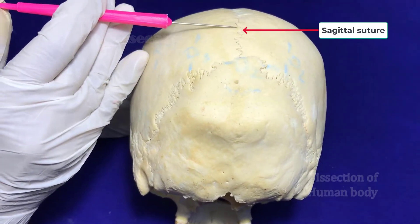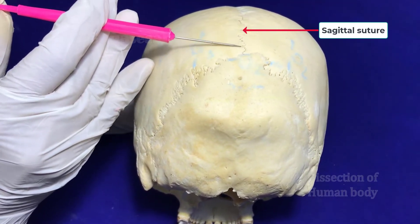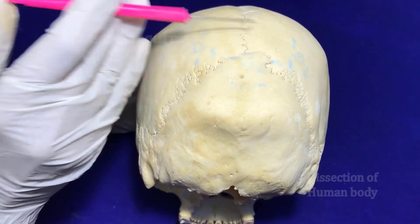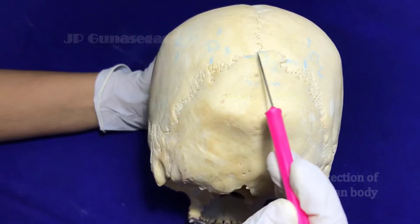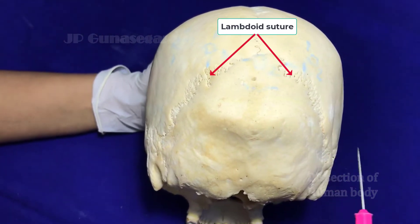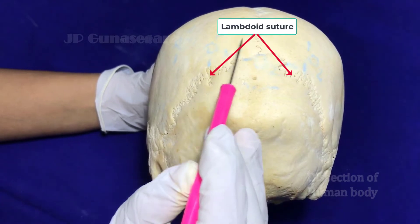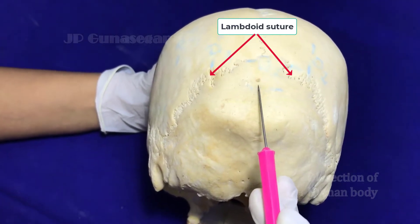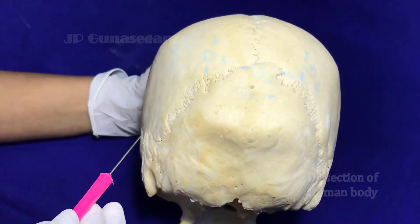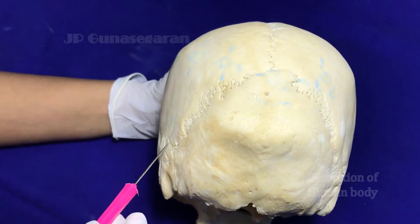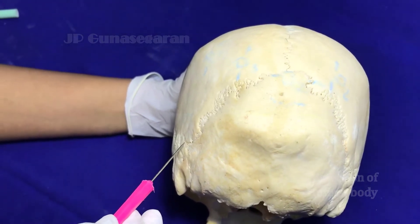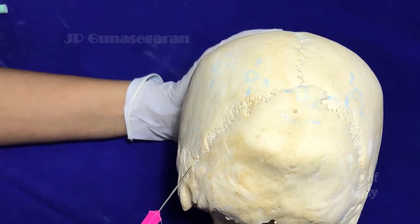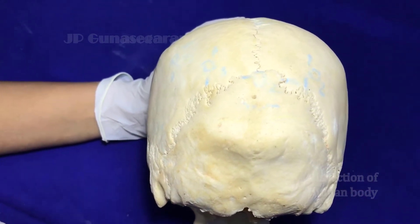What are the sutures that can be seen here? We can see the posterior end of the sagittal suture between the two parietal bones. We can see the lambdoid suture present between the parietal bones and the squamous part of occipital bone. We can also see the posterior end of parietomastoid suture as well as occipitomastoid suture.